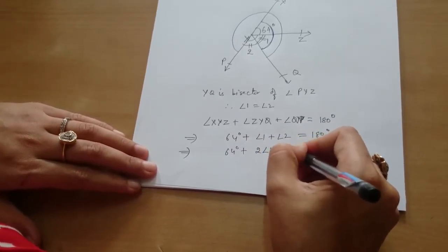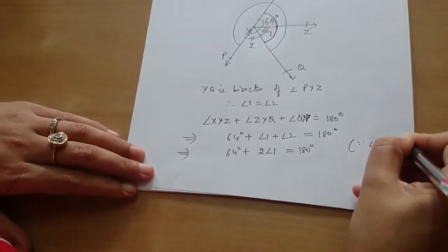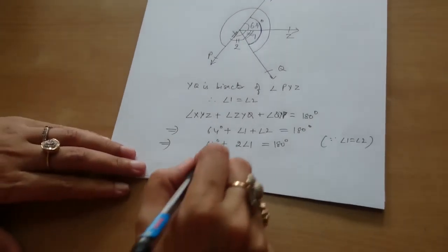This implies 64 degrees plus 2 angle 1, because these two are equal. So you can replace. Angle 1 is equal to angle 2. Solving this, we can find the value of angle 1.